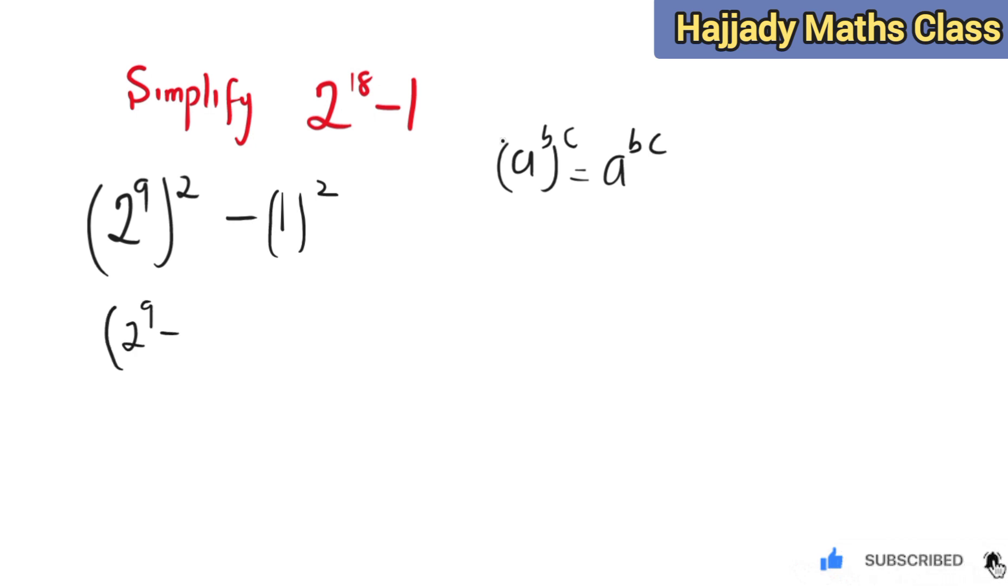And 2 raised to the power 9 can easily be computed: 2 raised to the power 2 is 4, raised to the power 3 is 8, raised to the power 4 is 16, raised to the power 5 is 32.